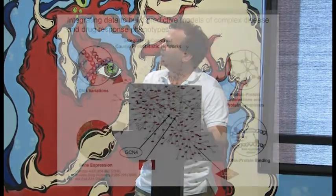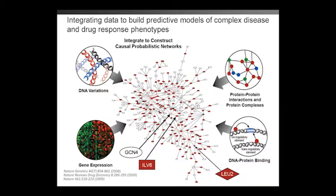If a DNA variation associates with two traits, there are only three ways those traits can be related: DNA causes changes in phenotype one then phenotype two, or vice versa, or DNA independently drives both traits. We can mathematically model that and infer the model best supporting the data. The magic is treating DNA variation as the perturbogen — if it were another expression trait, you'd have around 155 graphs to consider, roughly half being Markov equivalent and statistically indistinguishable. The fact that we can direct edges off the DNA reduces this to a three-graph problem.